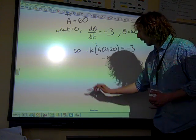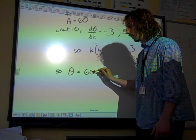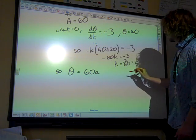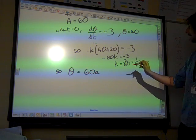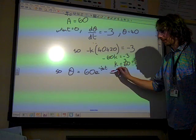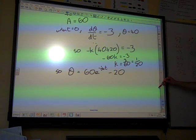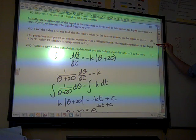Right. What have we got now? We've now got that θ = 60e^(-kt), so -1/20t, minus 20. That's our equation. That's the term. We've got rid of all the constants. That's what we wanted.